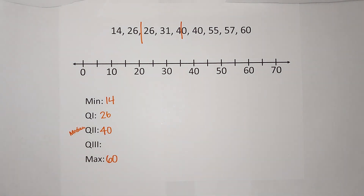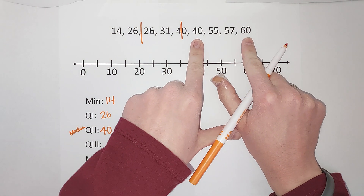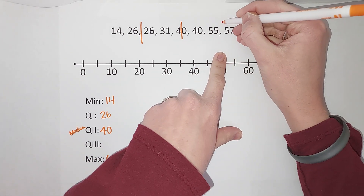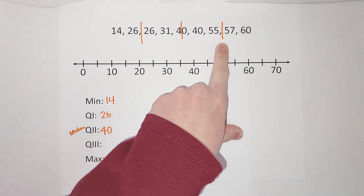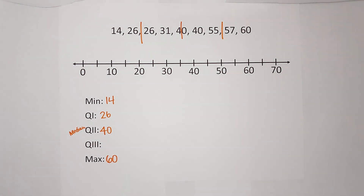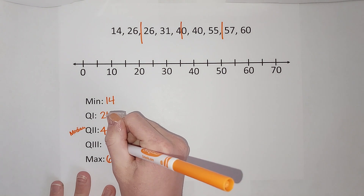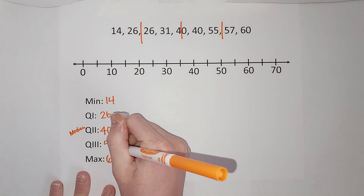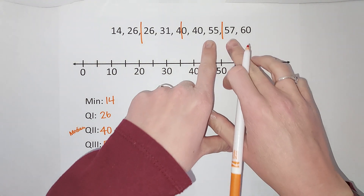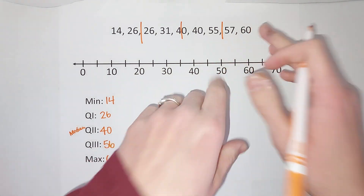For my third quartile, I take the middle of the top half. It falls between 55 and 57. The average of 55 and 57 is 56 — if you didn't get that right away, just add 55 plus 57 and divide by two to get 56.